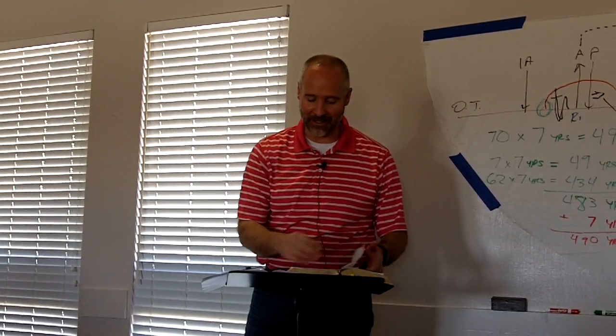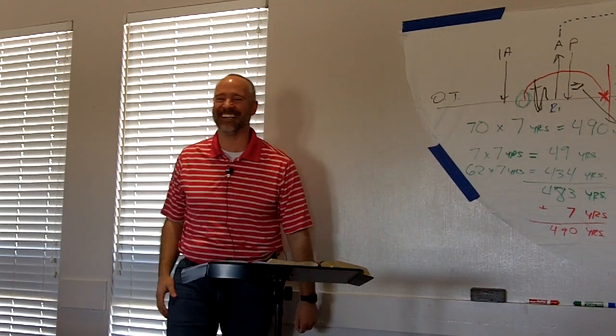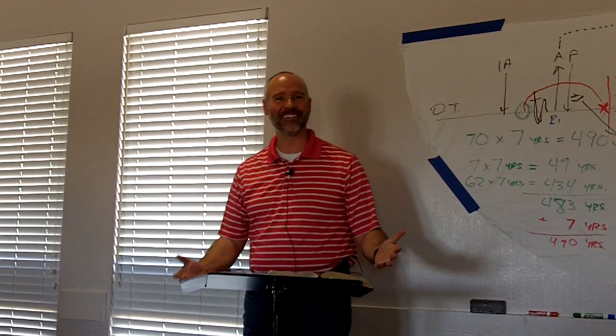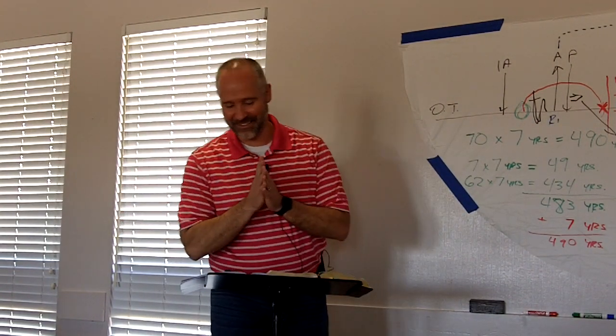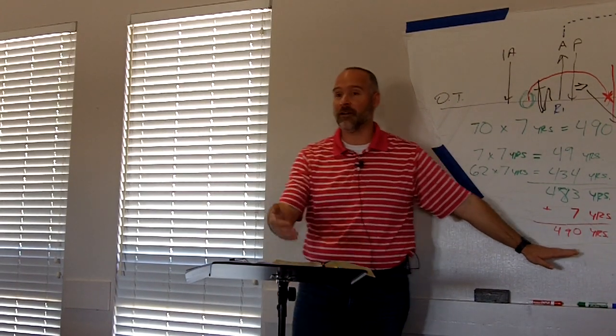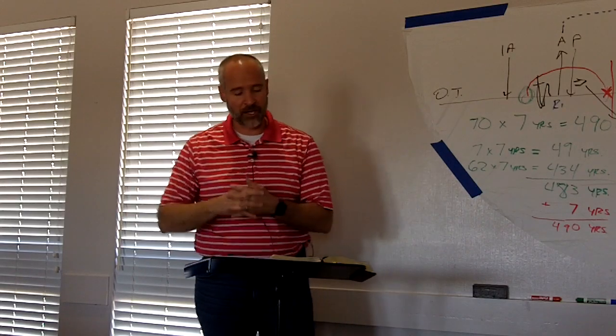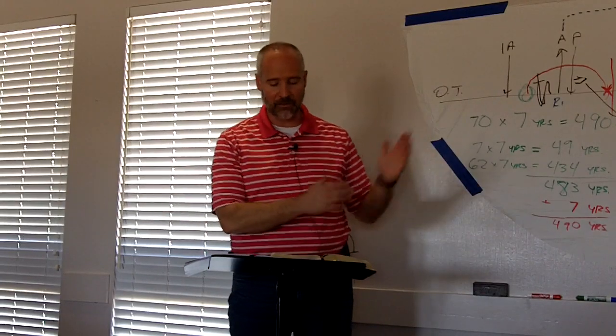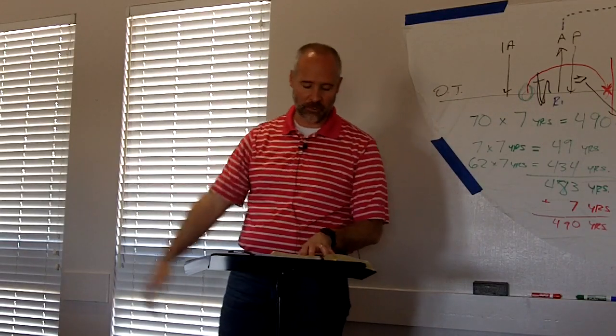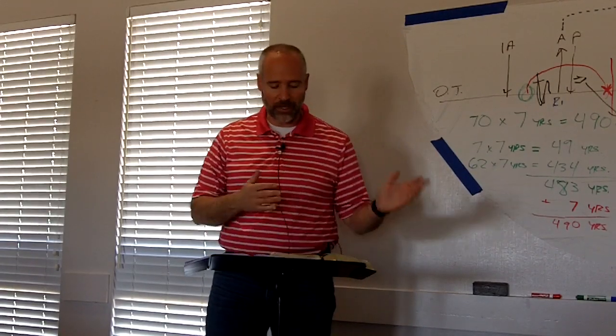Daniel chapter 9, flip back there, take a left turn, go back to the left side of the Bible. Daniel chapter 9. Let's start reading in verse 24. Seventy weeks, we know now that's 490 years, because a week here is a period of seven years. Seventy weeks are determined upon thy people and upon thy holy city to finish the transgression and to make an end of sins and to make reconciliation for iniquity and to bring in everlasting righteousness and to seal up the vision of prophecy and to anoint the most holy. Know therefore and understand that from the going forth of the commandment to restore and to build Jerusalem unto the Messiah the Prince shall be seven weeks and threescore and two weeks. The street shall be built again and the wall even in troublous times.